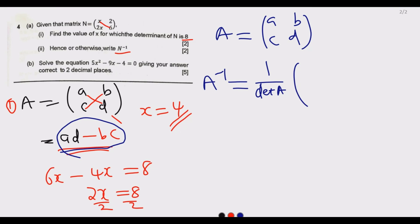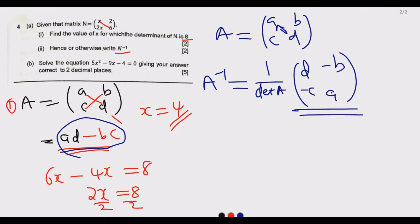What you do is swap a and d — they exchange positions — so you have d where a was and a where d was. Then b and c just change to opposite signs. This gives you the inverse. In a similar manner, let us now apply this to matrix N.